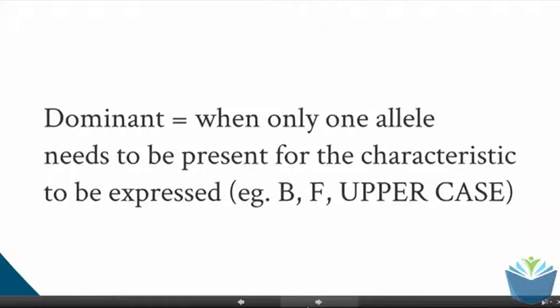A dominant allele is only when one allele needs to be present for the characteristic to be expressed. In this case, it's always represented by letters that are uppercase. An example of this might be if you had the dominant allele for eye color, which was brown, for example, and then the recessive eye color, which might be blue. You'd only need one brown because it's the dominant one for it to be expressed.